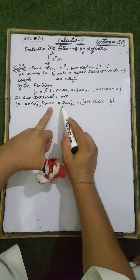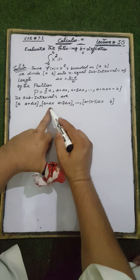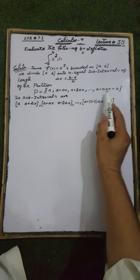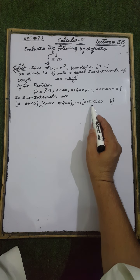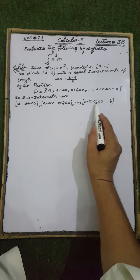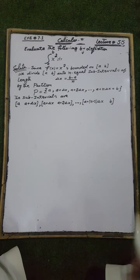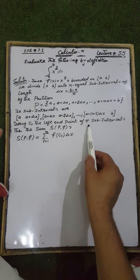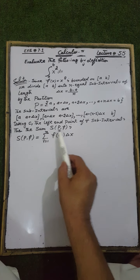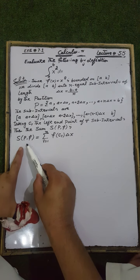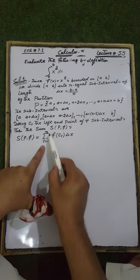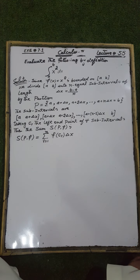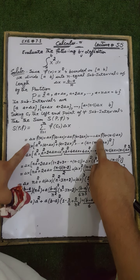The subintervals have left endpoints: a, a + Δx, a + 2Δx, and so on, up to a + (n-1)Δx, with right endpoint b. Taking cᵣ as the left endpoint of each subinterval, the Riemann sum on partition p is given by the summation from r = 1 to n of f(cᵣ)Δx.